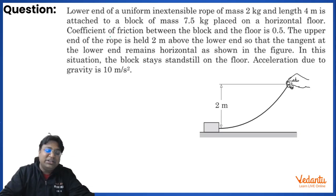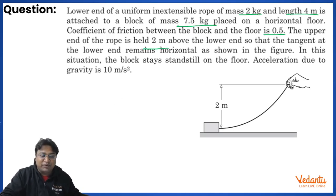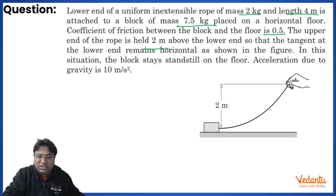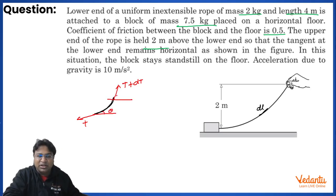Before solving the specific question, let me give the theory needed. Consider a small segment of the string of length dn. At different points, the tension and inclination both vary for a heavy rope. Let the inclination at one end be θ and at the other end be θ + dθ, with corresponding tensions T and T + dT, plus a weight force dm·g on the element.